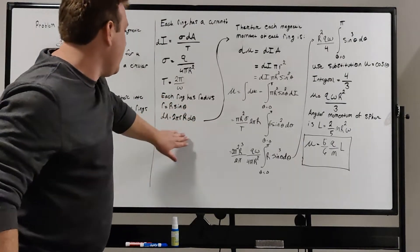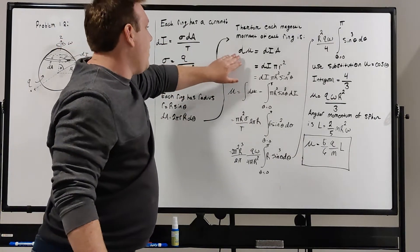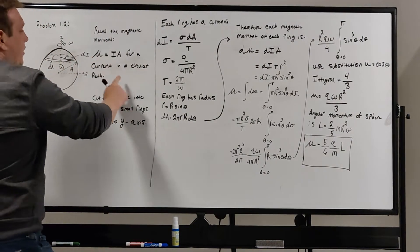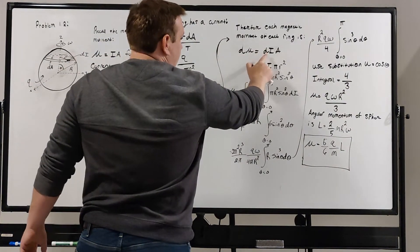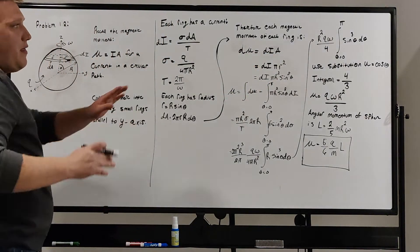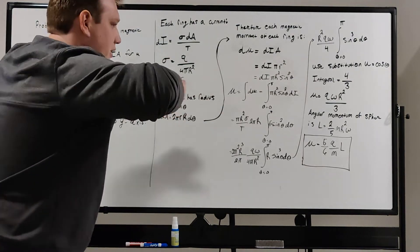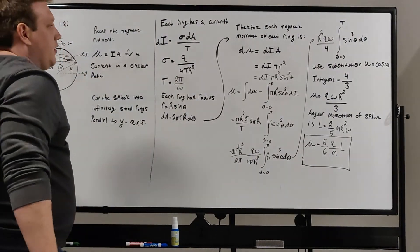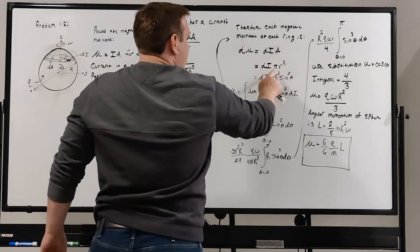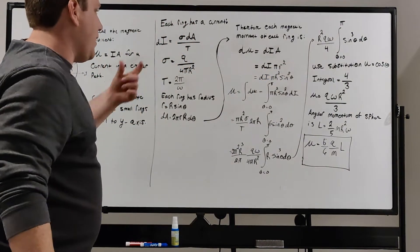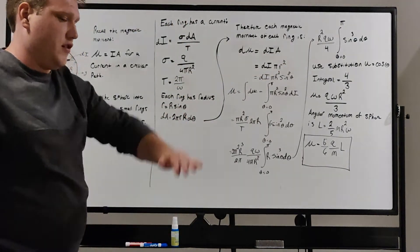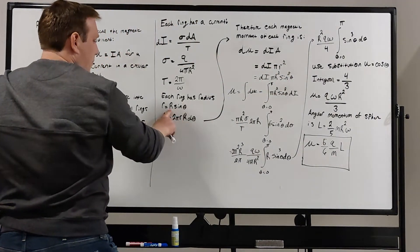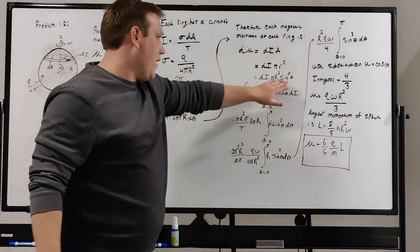Now we can find the infinitesimal magnetic moment of each ring, because we know that the magnetic moment is related to the current in the area. So d mu equals the infinitesimal current of each ring times the area of each ring, and that area A is the area of that cross-section that the ring makes with the sphere, that flat area. That A is just pi r squared, little r squared, the radius of that ring, because that area A changes as you go up the sphere and down the sphere. We know that little r is given by this, so plug that in, and you get R squared sine squared of theta.